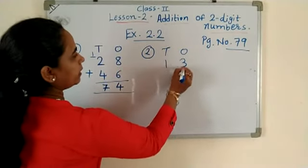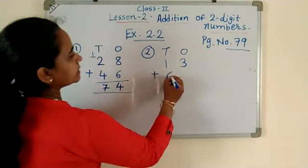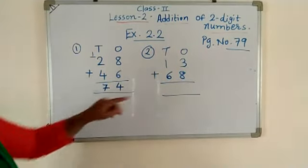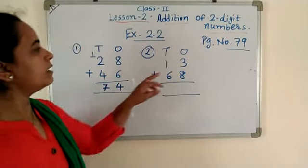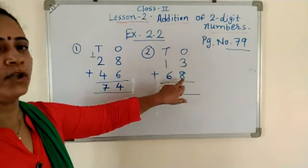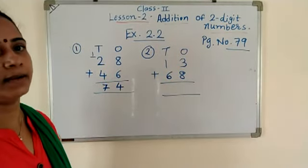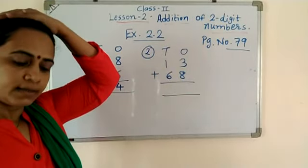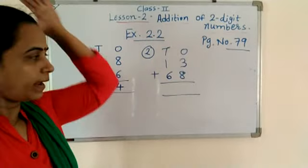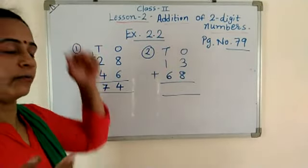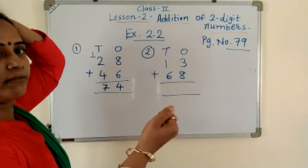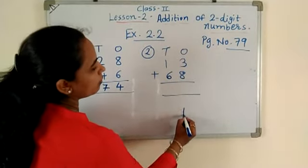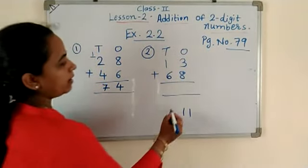13 plus 68. Add this. First add 1's place. Okay? In 1's place, 3 plus 8. Okay? So now 3 plus 8. So 8 is bigger number. So 8 is in your mind. Fix, 9, 10, 11. Okay?